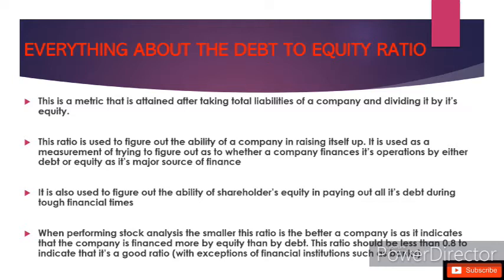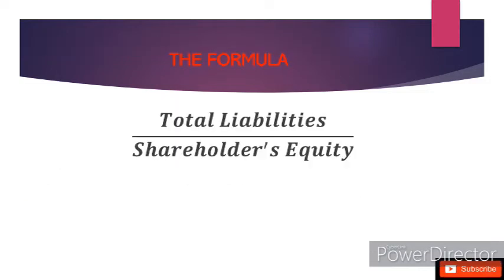When performing stock analysis, the smaller this ratio is, the better, as it indicates the company is financed more by equity than by debt. This ratio should be less than 0.8 to indicate a good ratio, with exceptions for financial institutions such as banks. The ratio should be at most 0.8, meaning for every one shilling of equity the business has at most 80 cents of debt. For banks, the ratio could reach as high as nine — meaning nine shillings of debt per one shilling of equity — yet the bank can still perform well financially.